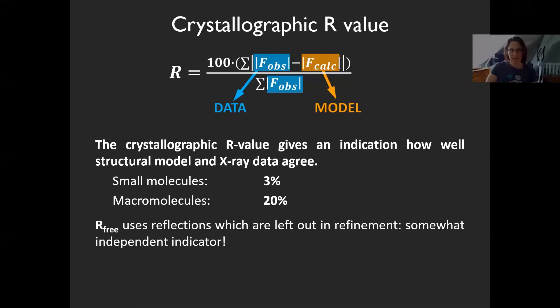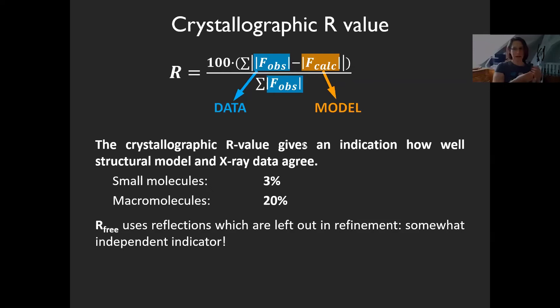For small molecule structures, R values are typically between 1 and 10 percent. For macromolecular structures, values range from about 10 to 35 percent — much higher. This points to a main research topic of my lab: why is the fit of macromolecular data so bad? Have we some problem in data processing, errors in measured data, or have we missed something underlying all 170,000 structures in the model? For you, it's important to know that about 20 percent is a normal R value for a macromolecule.